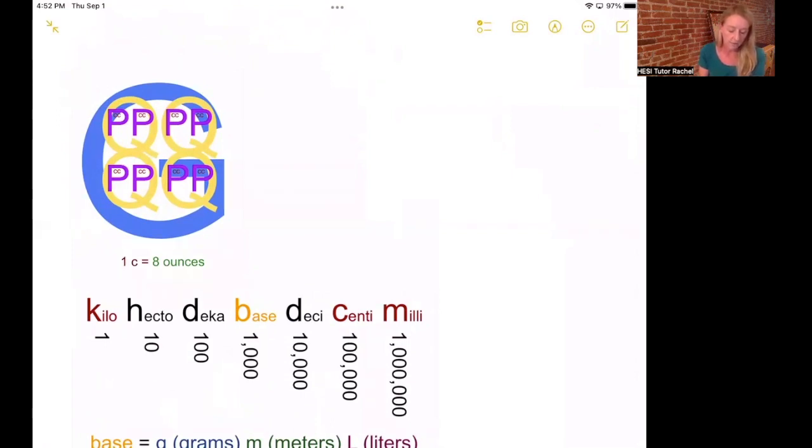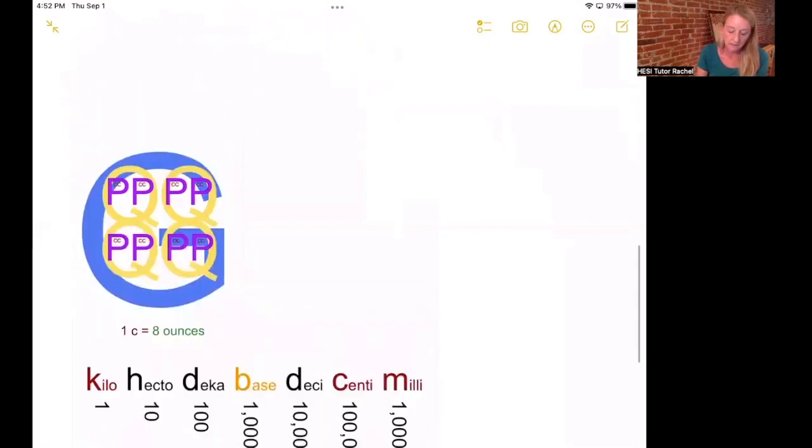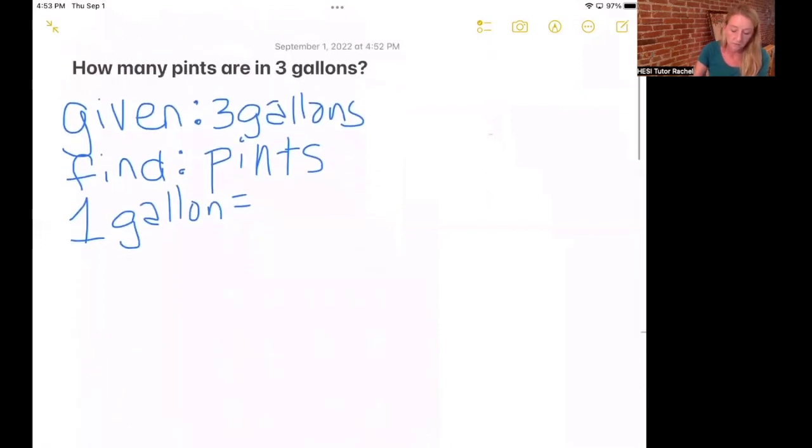And we do that just by counting up how many pints are pictured inside of that one G. So in this case, we're going to just count up all of the P's here, which is one, two, three, four, five, six, seven, eight. So eight pints is equal to one gallon.